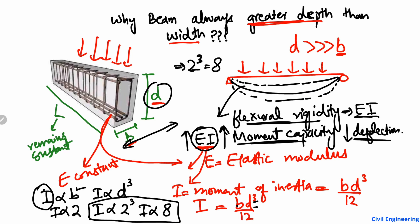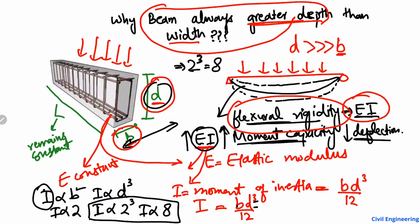The effect of depth on the moment of inertia is exponentially higher than that of width, giving eight times more capacity versus two times. The flexural capacity or bending stiffness of the beam is much more related to depth than to width. This is the main reason we always choose a greater depth — because the moment of inertia increases far more by increasing depth than by increasing width. Hope you understand! Don't forget to subscribe to our channel. Thank you for watching.